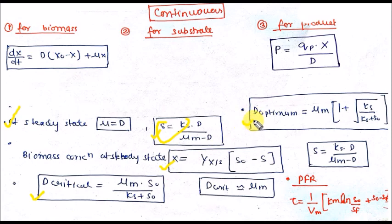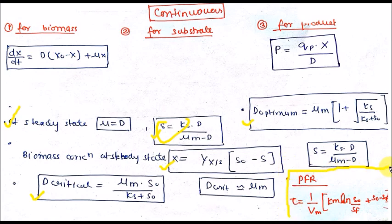The formula for D critical — the washout condition — and D optimal, where maximum growth rate occurs, are shown here. This is the formula for a plug flow reactor; you can calculate the residence time tau equal to (1/Vm) times [Km times ln(S₀/Sf) plus S₀ minus Sf].